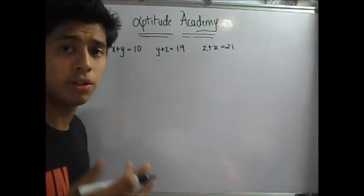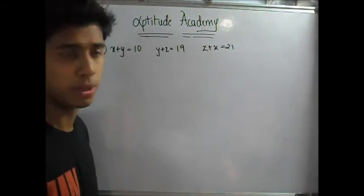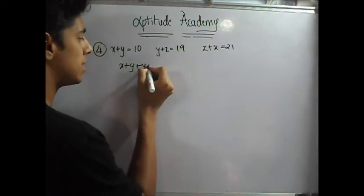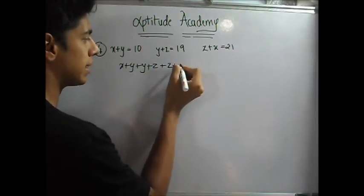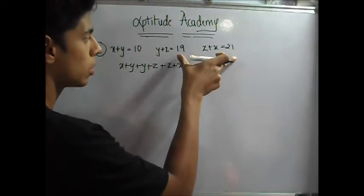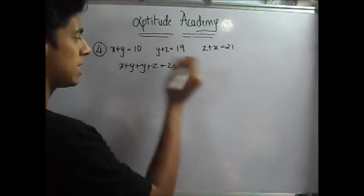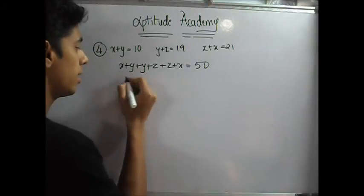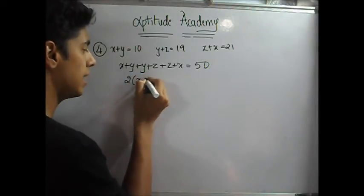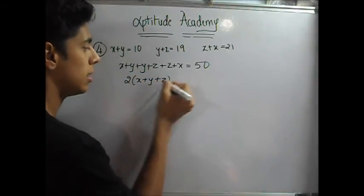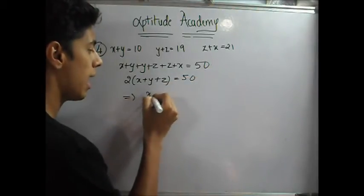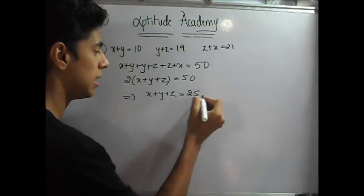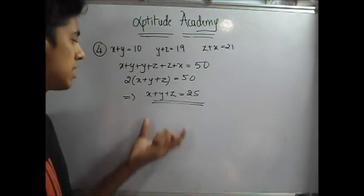How do you do this? First step, add all of these up. You've got x plus y plus y plus z plus z plus x is equal to 10 plus 19 plus 21. 21 plus 19 is 40, 40 plus 10 is 50. Now, on the LHS, you have 2 x's, 2 y's, 2 z's. So you can have 2 into x plus y plus z is equal to 50. It implies x plus y plus z is equal to 50 by 2, that is 25. This is your main equation. Now it gets very simple.